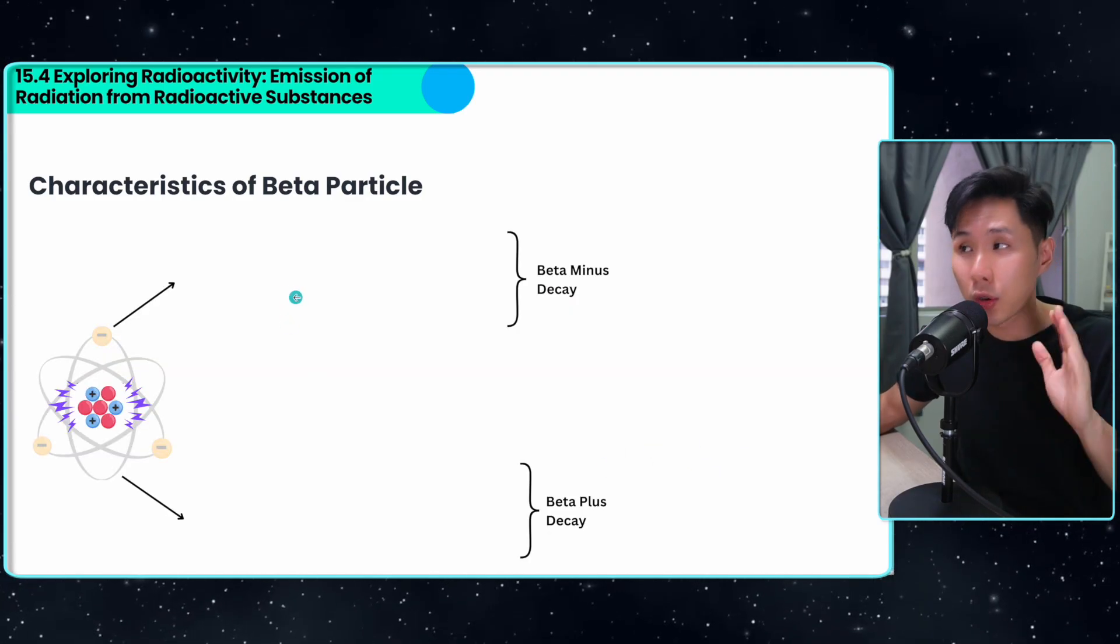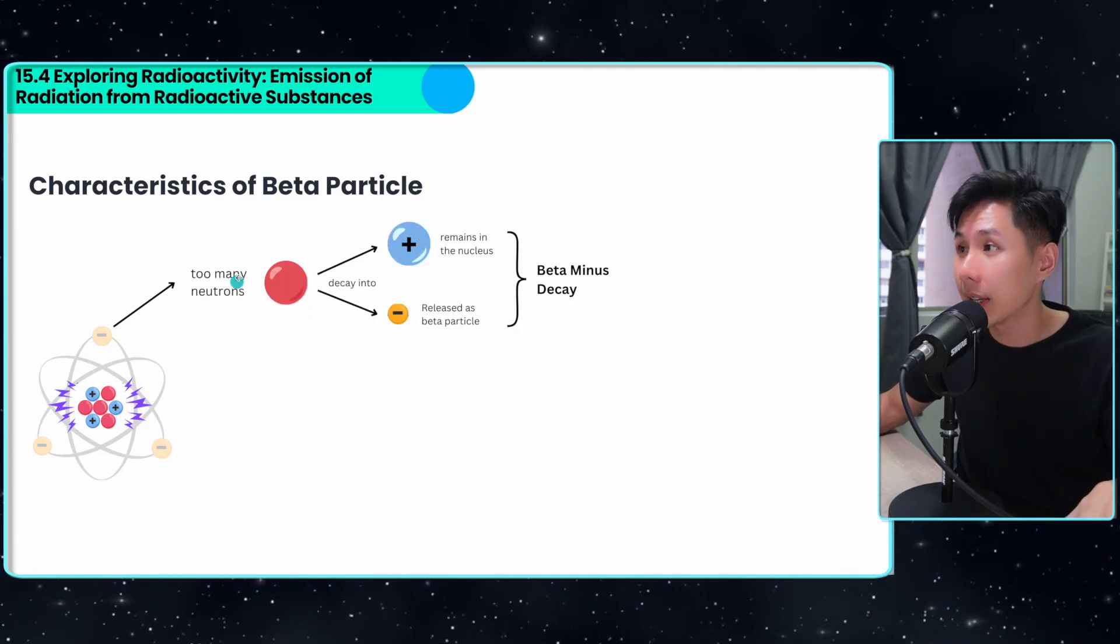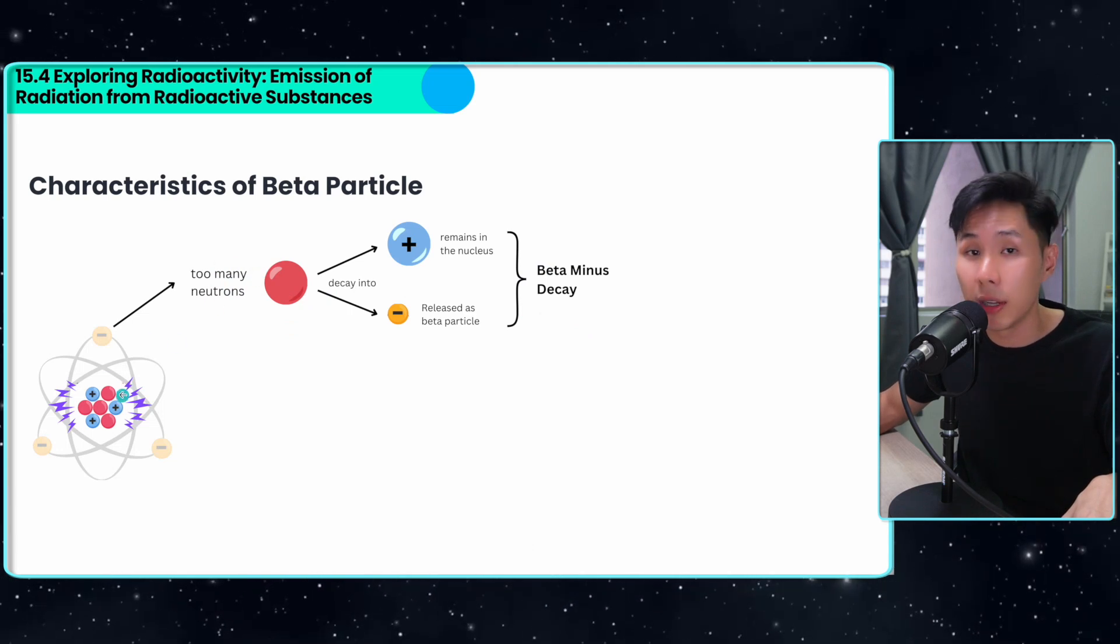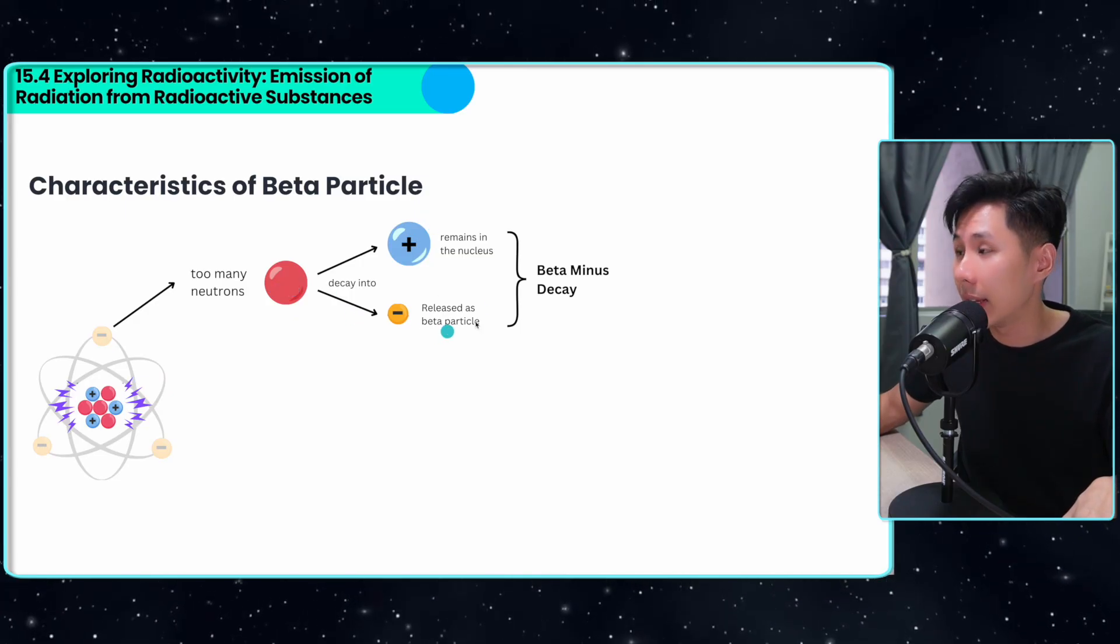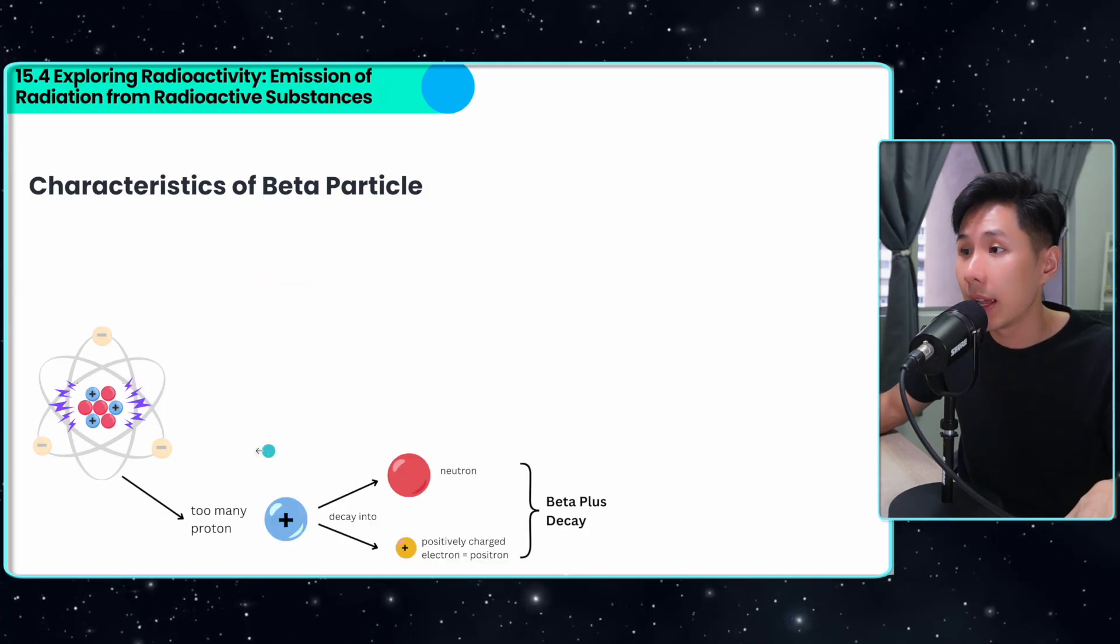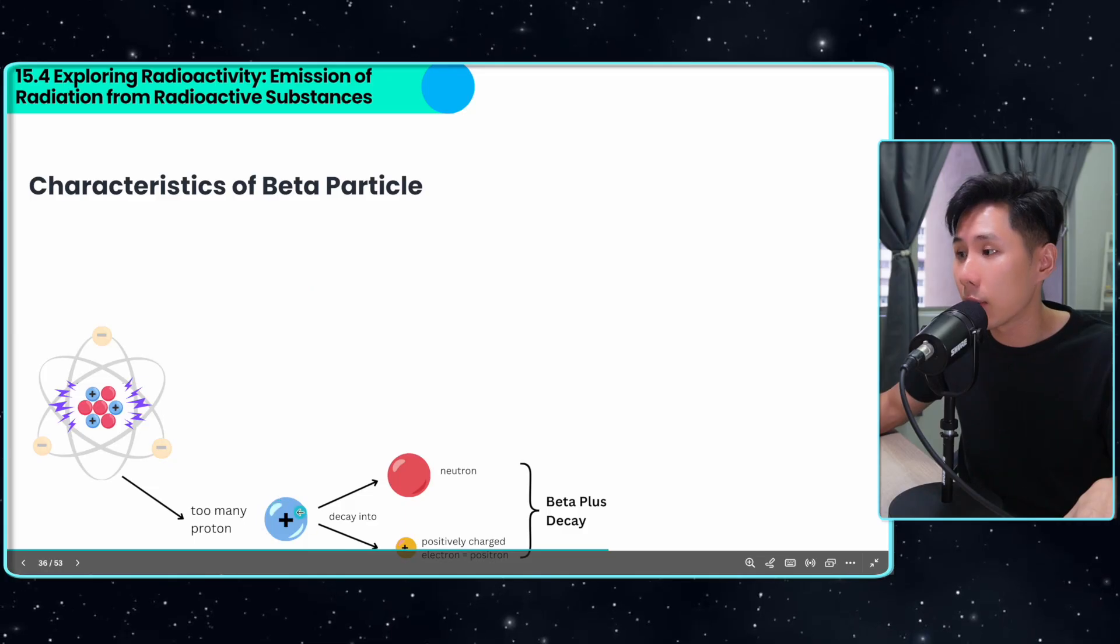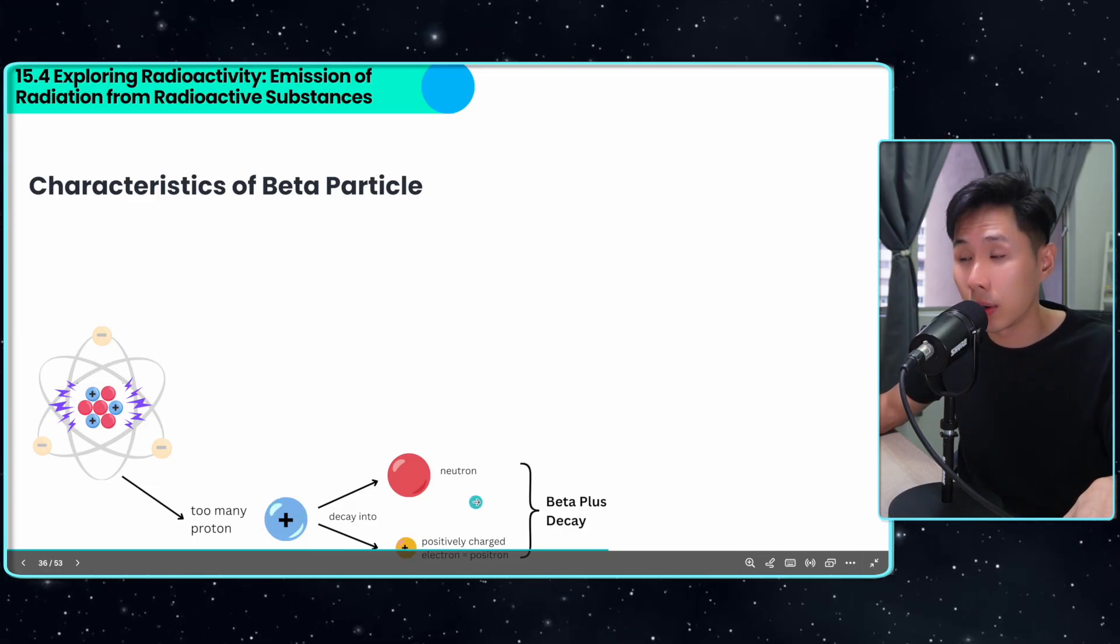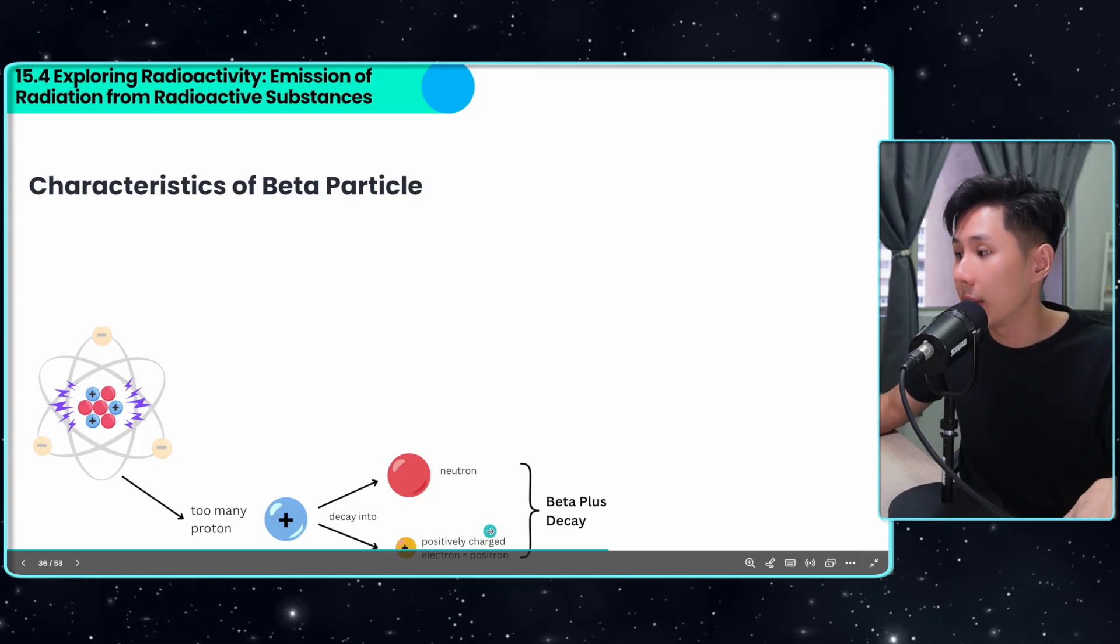In your IGCSE, you should have learned the characteristics of beta decay. This is how it looks like. Beta decay happens when there are too many neutrons in the nucleus, and the neutron decays into a proton and an electron, which is released as a beta particle. What's new for you is that the nucleus could also have too many protons, and this proton turns into a neutron and a positively charged electron, which is emitted as beta plus particles.